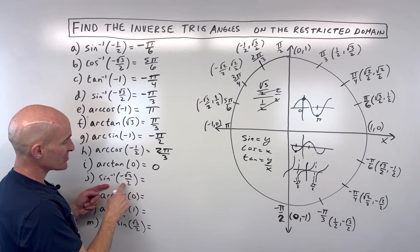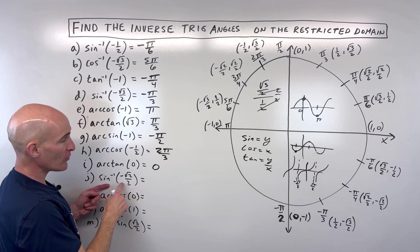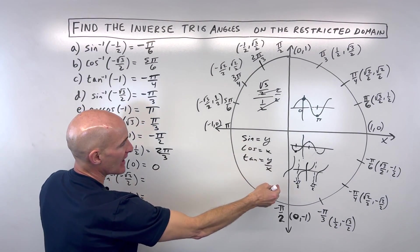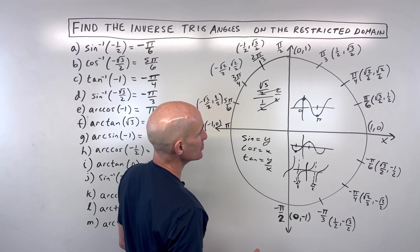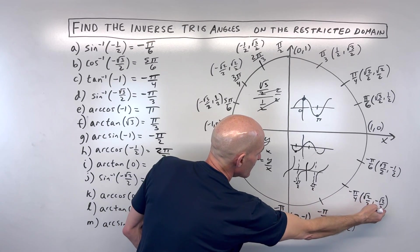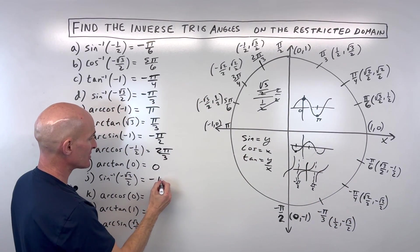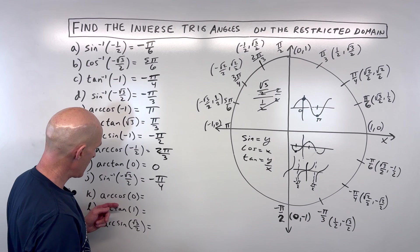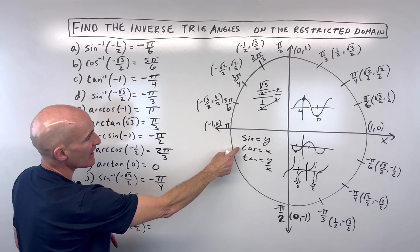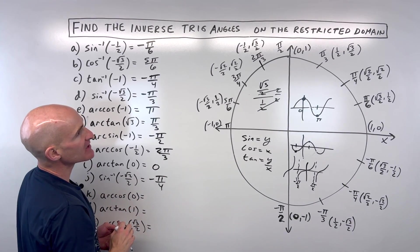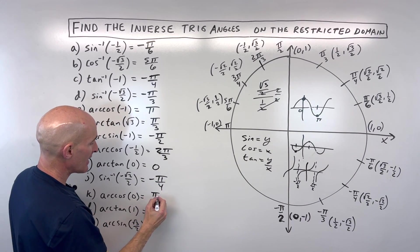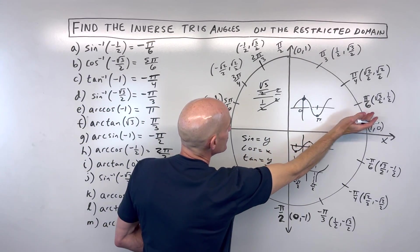For letter J: sine inverse of negative root two over two means sine of what angle equals negative root two over two. Sine is the y-coordinate, restricted from negative pi over two to positive pi over two. That's going to occur at negative pi over four — like negative 45 degrees. For letter K: arc cosine of zero means cosine of what angle equals zero. Cosine is the x-coordinate — where is x equal to zero? That's at pi over two radians. Remember cosine is restricted from zero to pi.